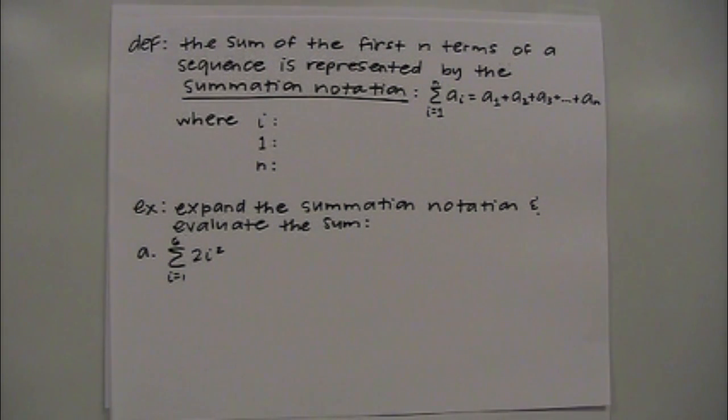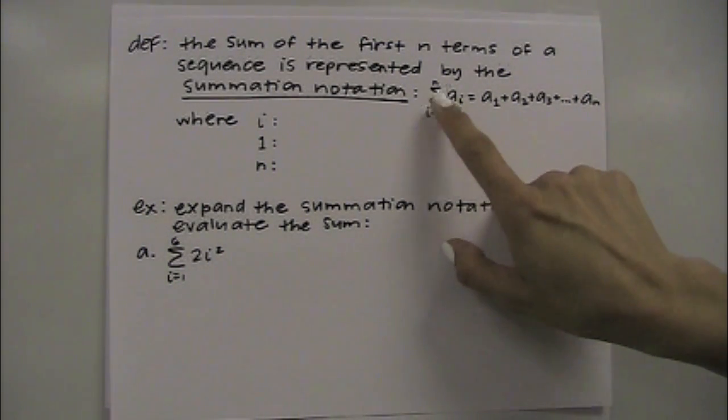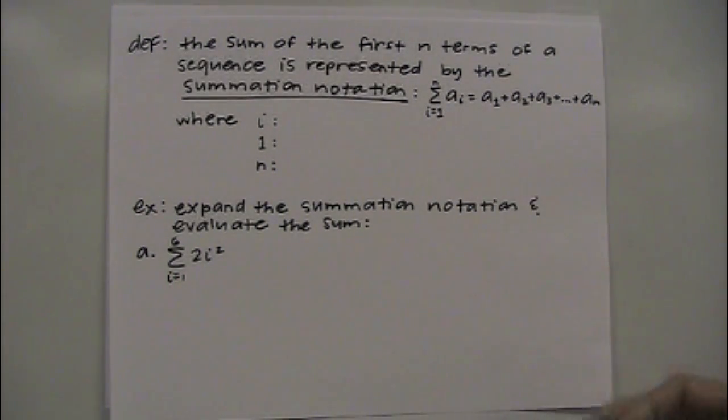And we're going to look at summation notation. The definition: the sum of the first n terms of a sequence is represented by the summation notation right here. It's using sigma, the Greek letter sigma, which for math we're representing it to take a sum.